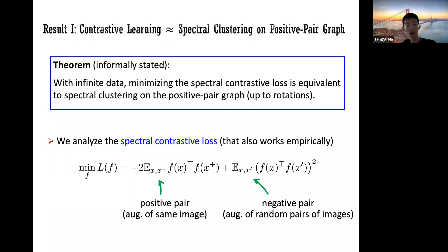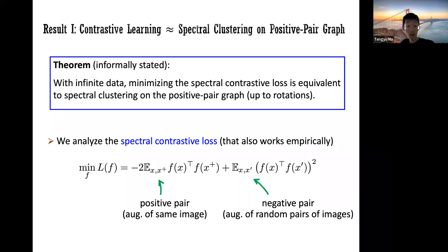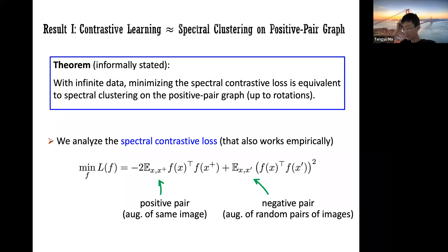The loss has two parts. The first part is about the positive pair — you want augmentations of the positive pair to have high correlation, so you minimize the negative of this correlation. The second part is the negative pair — you minimize the correlation squared to encourage small correlations. It's the same principle as SimCLR but without exponentials. We show experiments demonstrating very similar — sometimes better — performance with this loss, and it has practical benefits like allowing small batch sizes without momentum encoding tricks.